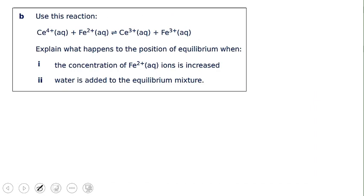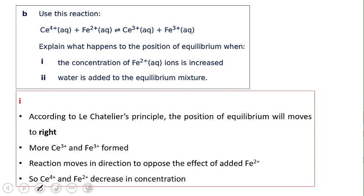Part (b): Using the Fe²⁺/Ce³⁺ equation, what happens when the concentration of Fe²⁺ ions is increased? Fe²⁺ is on the reactant side, so increasing it disturbs equilibrium. According to Le Chatelier's principle, the reaction moves toward the product side to decrease the excess reactant, producing more Ce³⁺ and Fe³⁺ ions to oppose the change.